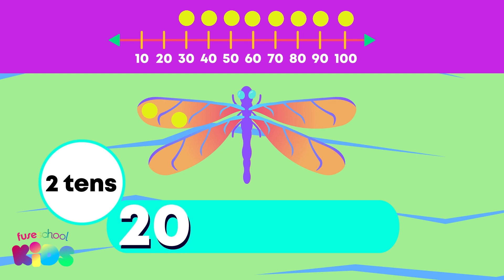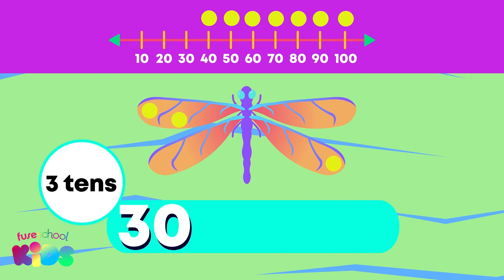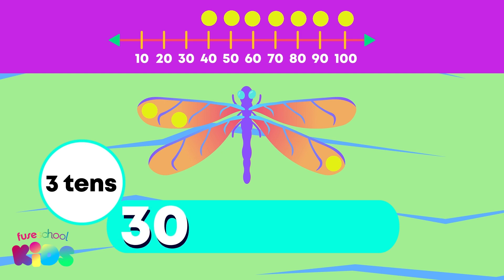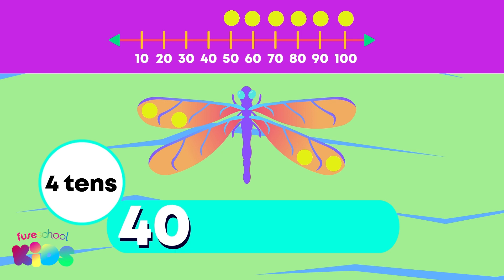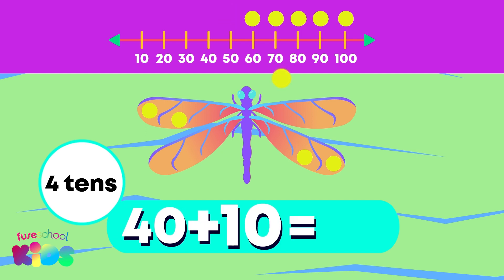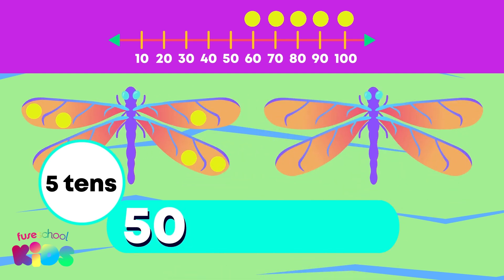2 tens is 20. Let's add one more 10. 3 tens is 30. Let's add one more 10. 4 tens is 40. Let's add one more 10. 5 tens is 50.